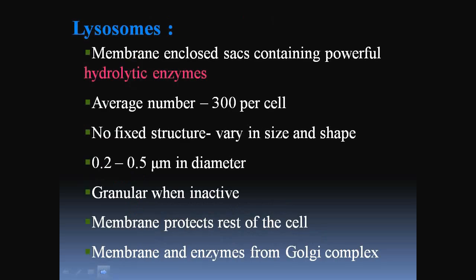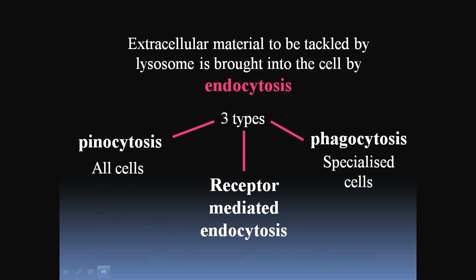Looking at lysosomes in detail, these are membrane-enclosed sacs containing powerful hydrolytic enzymes. The average number is about 300 per cell. Their size ranges from 0.2 to 0.5 micrometers in diameter. They are granular when inactive, and their membrane protects the rest of the cell. Extracellular material to be taken in by lysosomes is brought into the cell by endocytosis, which is classified into three types: pinocytosis, phagocytosis, or receptor-mediated endocytosis.